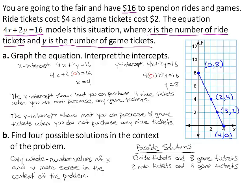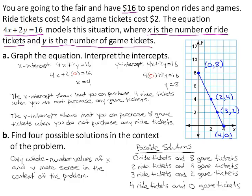Notice that 3, 2 is another point on the line segment, so you can purchase 3 ride tickets and 2 game tickets. Because the x-intercept is 4, 0, you can purchase 4 ride tickets and 0 game tickets.